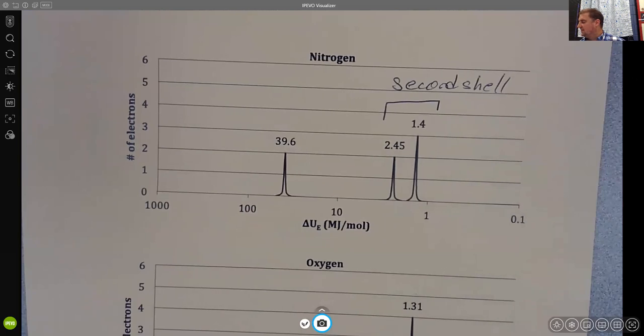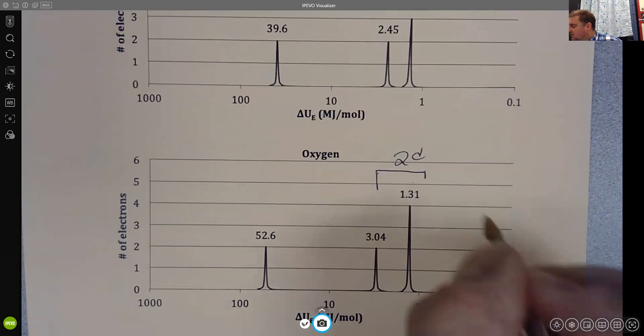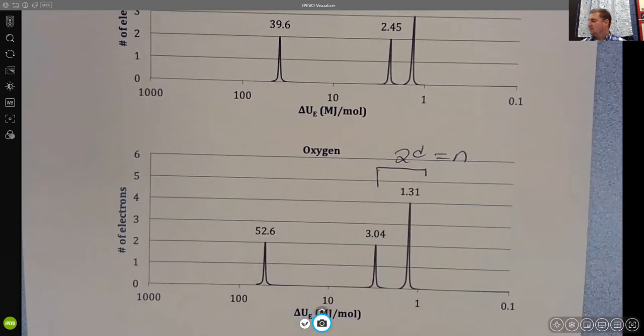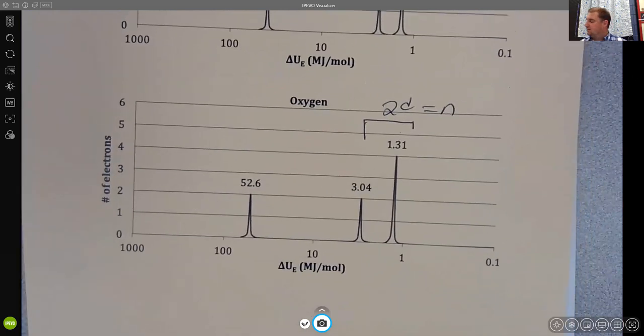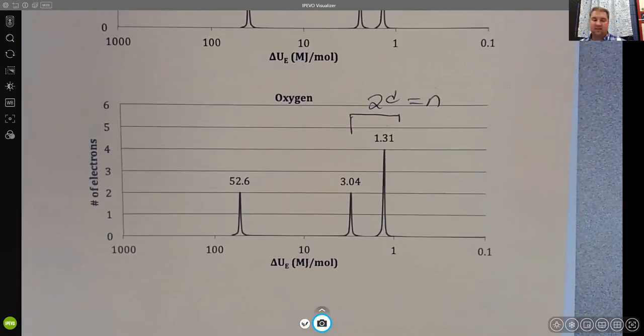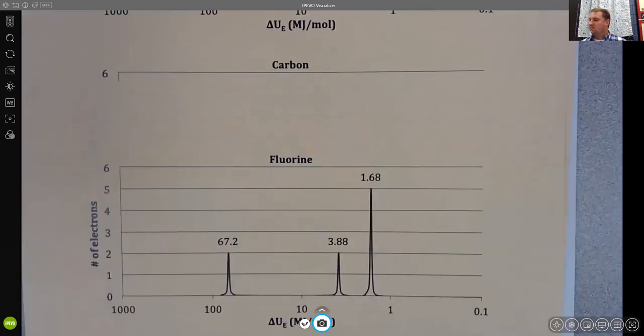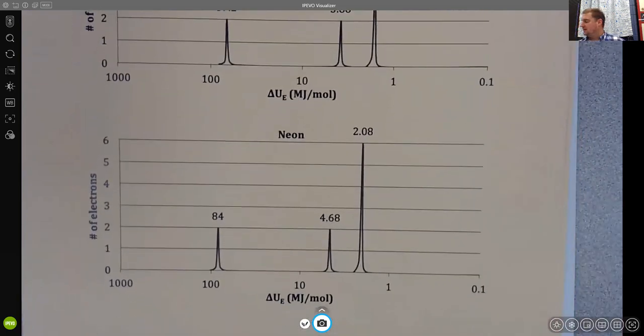And we see down here the second shell now holds four electrons. If we continue on to fluorine, fluorine has five, and neon has six.